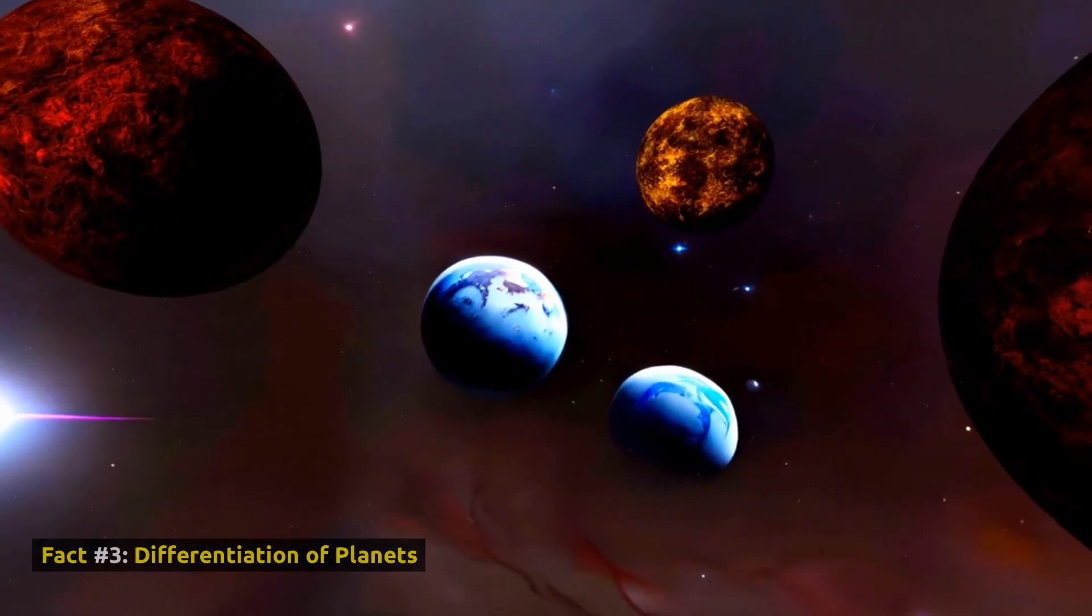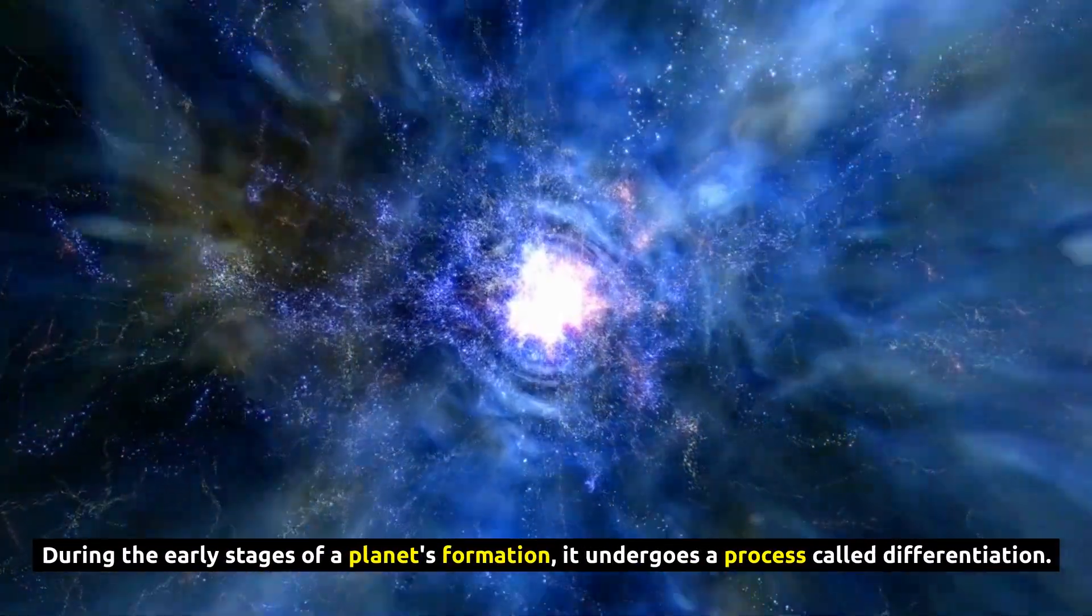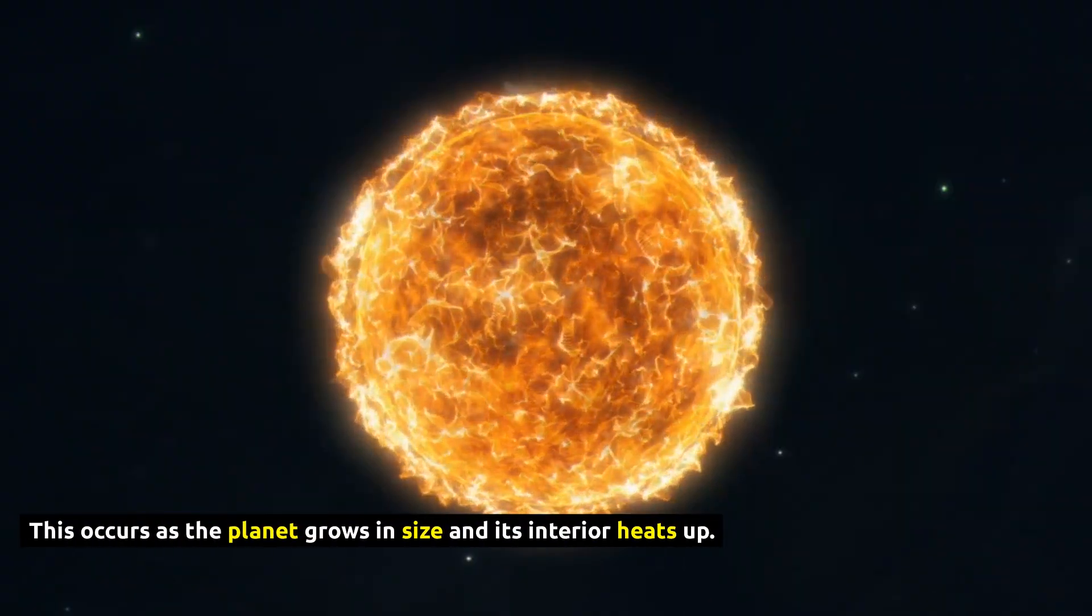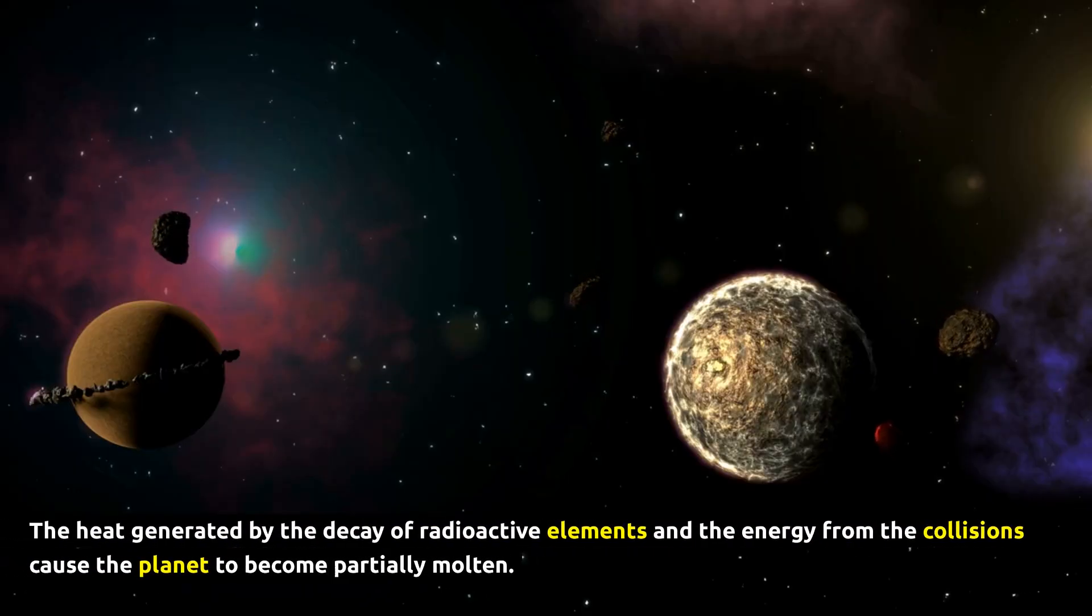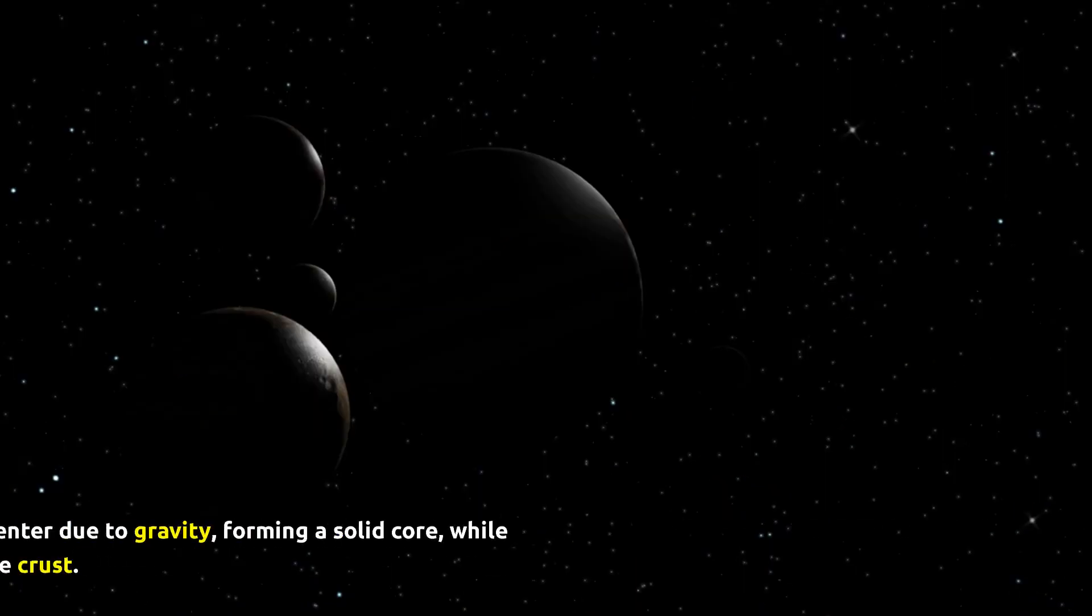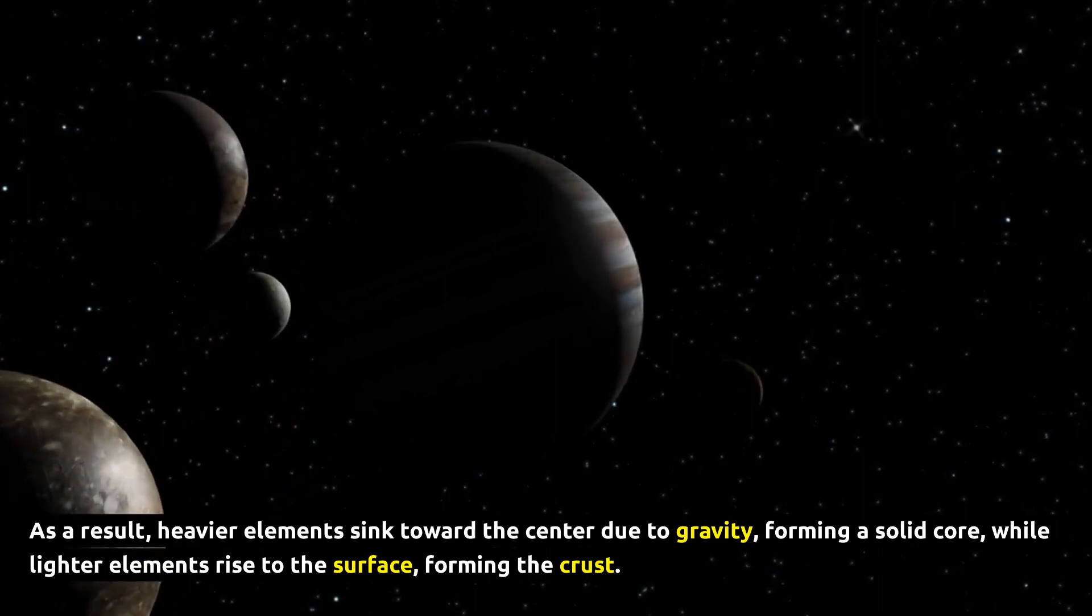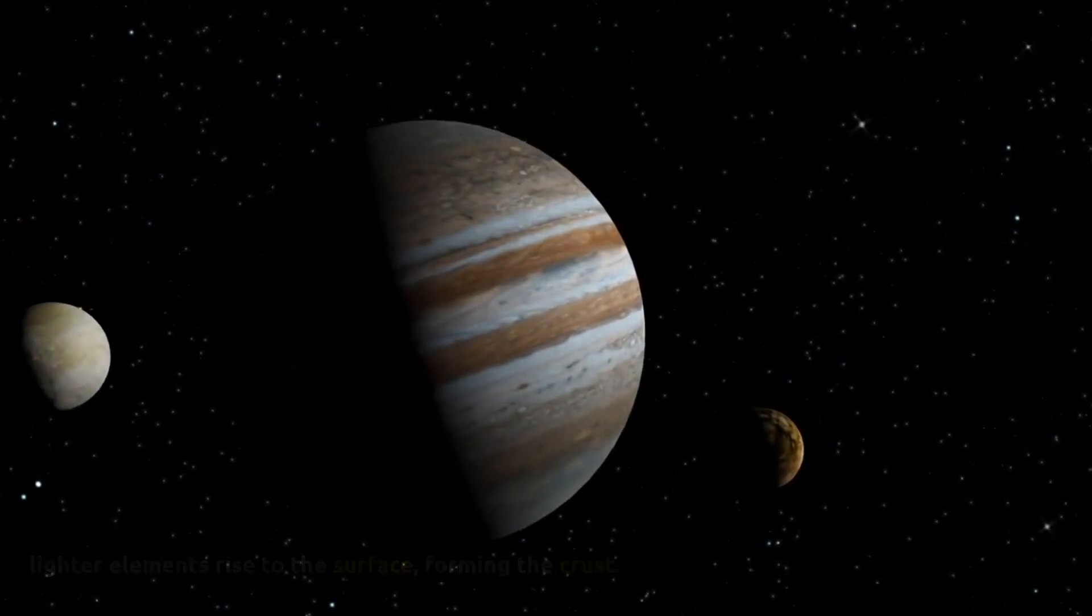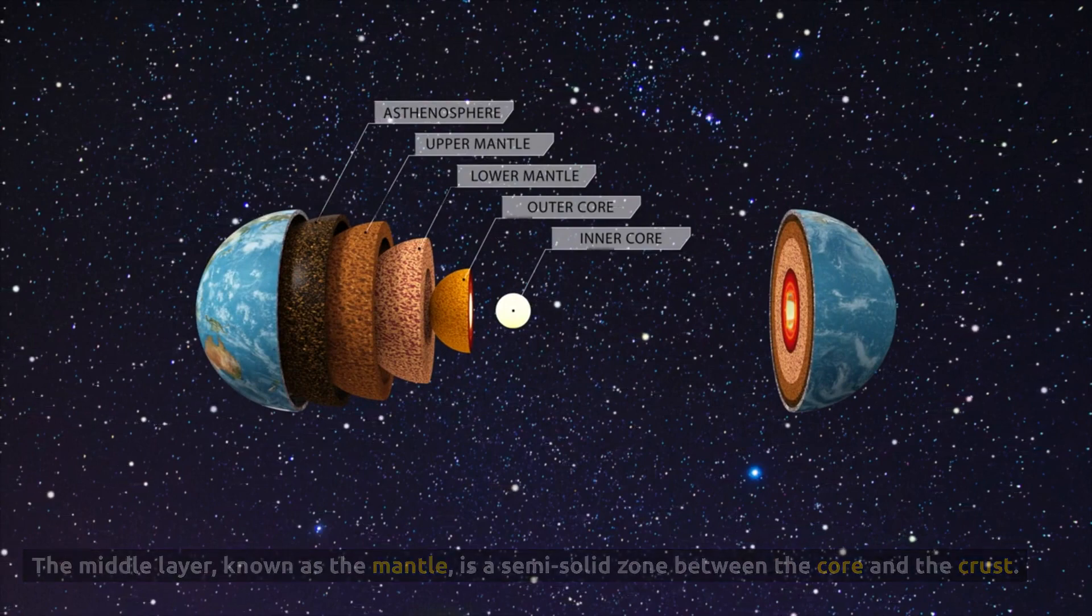Fact Number 3, Differentiation of Planets. During the early stages of a planet's formation, it undergoes a process called differentiation. This occurs as the planet grows in size and its interior heats up. The heat generated by the decay of radioactive elements and the energy from the collisions cause the planet to become partially molten. As a result, heavier elements sink toward the center due to gravity, forming a solid core, while lighter elements rise to the surface, forming the crust. The middle layer, known as the mantle, is a semi-solid zone between the core and the crust.